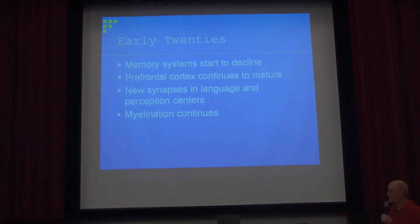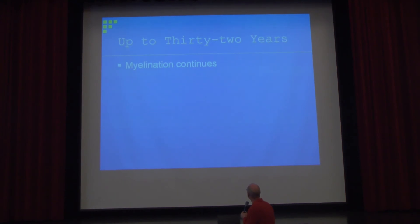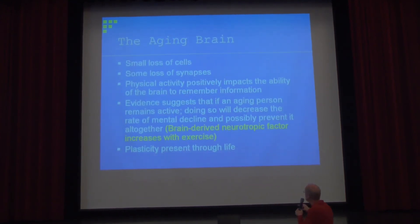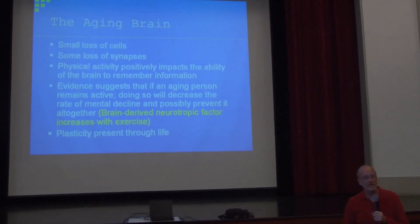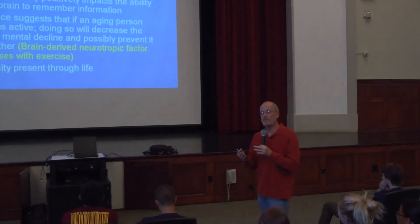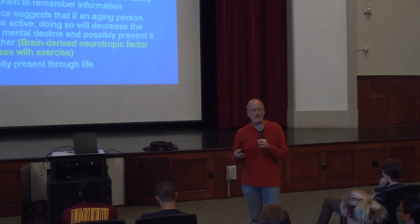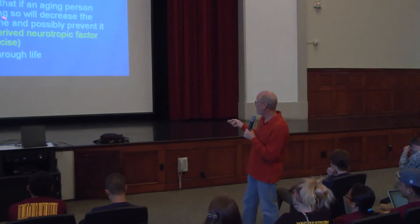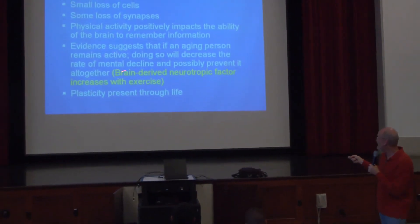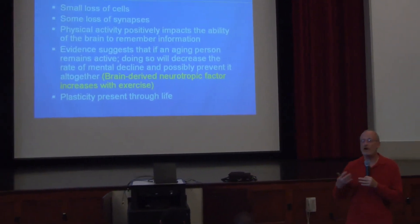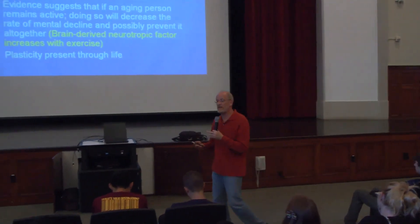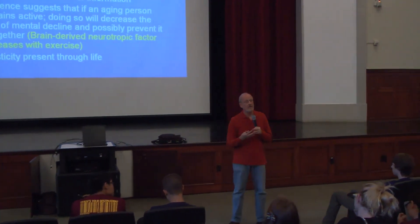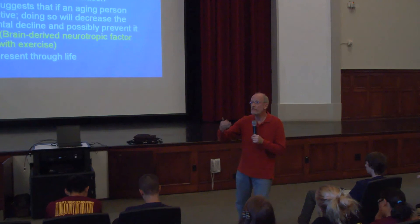Memory systems start to decline in their 20s. Myelination continues into the early 20s. In the aging brain, one hopeful finding is the relationship between capability and exercise. They showed a gentleman in his 90s doing sit-ups and push-ups, attributing that to brain-derived neurotrophic factor, or BDNF — a chemical that causes cells to divide. So you can replace some brain cells that may have withered away and maintain your capacity if you maintain your exercise. You have plasticity throughout your life.